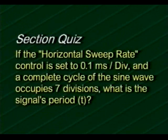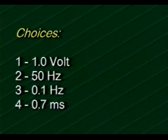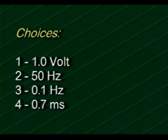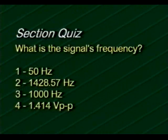Try this one: if the horizontal sweep rate control is set to 0.1 milliseconds per division and a complete cycle of the sine wave occupies seven divisions, what is the signal's period? The choices are: 1 volt, 50 hertz, 0.1 hertz, or 0.7 milliseconds. The correct answer is choice four: 0.7 milliseconds.